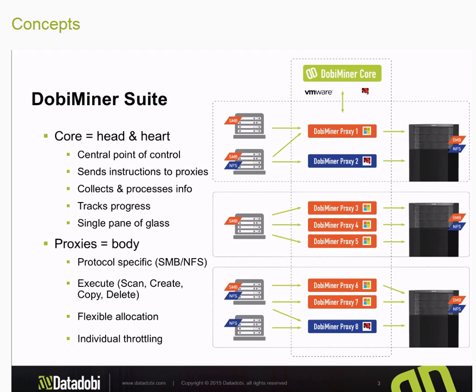There are two different flavors of proxies. There's an SMB proxy for Windows environments and there are NFS proxies for Linux or Unix environments. These proxies can be combined in any numbers independent of each other to cover mixed mode environments, and they execute instructions as directed by the core.